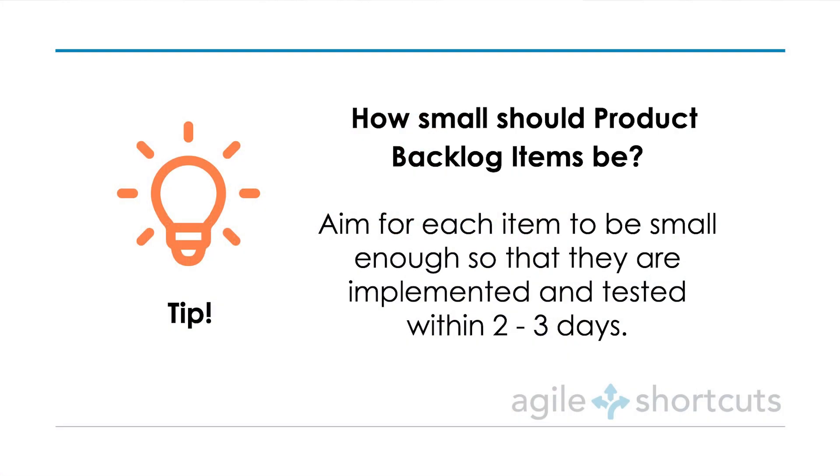Once your team breaks down the product backlog items, how small should they actually be? Personally, when I'm helping teams running two-week sprint cycles, what I like to see is the team break the product backlog items down so that they don't take any longer than two or three days to implement and test. That's generally what I look out for, but every team is different — I would suggest you experiment and find what works for you.